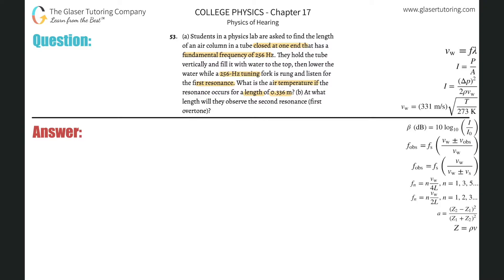What is the air temperature if the resonance occurs for a length of 0.336 meter tube? So basically all we have to do here is they tell us the fundamental frequency. So the frequency of the first harmonic is going to be 256 hertz. That means the n value is one.